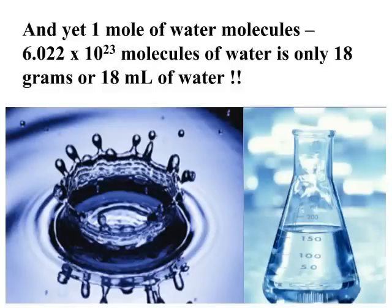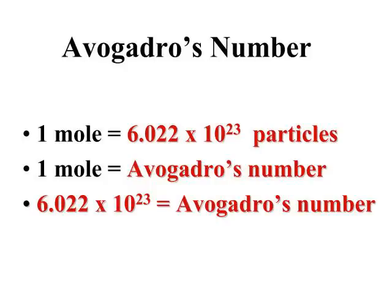If you have a mole of water molecules — 6.022 times 10 to the 23rd molecules of water — that would be the number of water molecules in only 18 grams or 18 milliliters of water. Once you're down to the size of a water molecule, you can have 6.02 times 10 to the 23rd of these particles and have a reasonable amount. Your conversion factor is the mole being equivalent to 6.022 times 10 to the 23rd particles, which we call Avogadro's number.